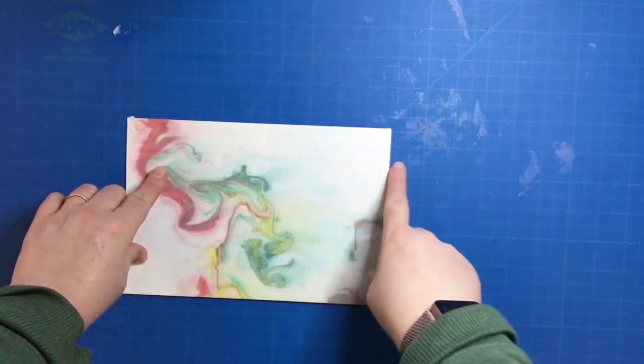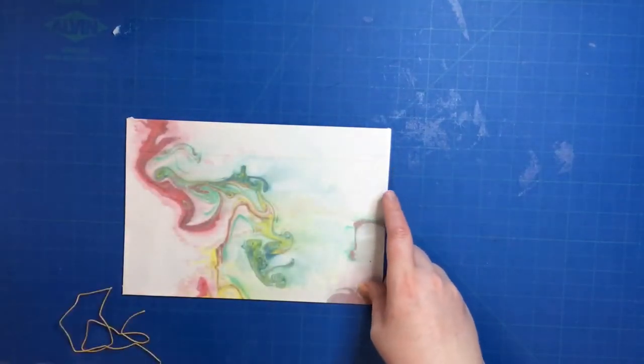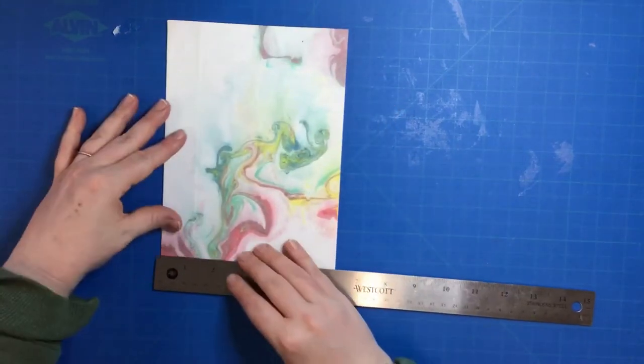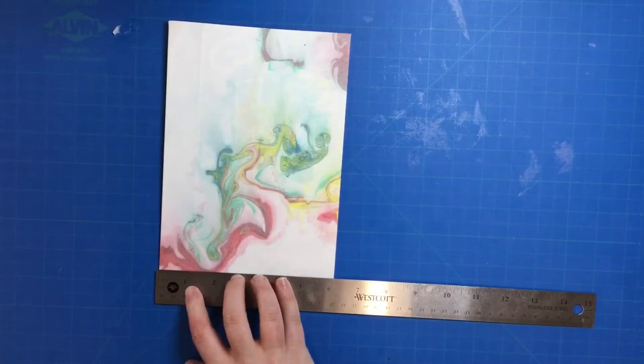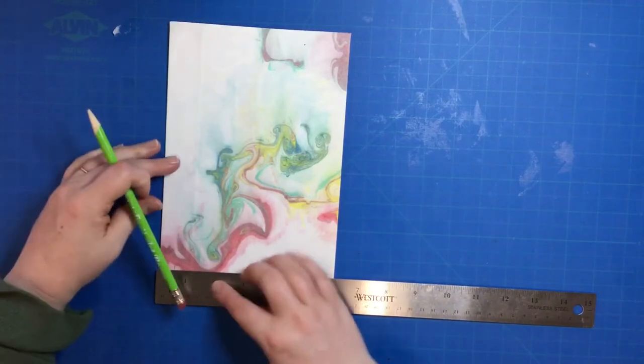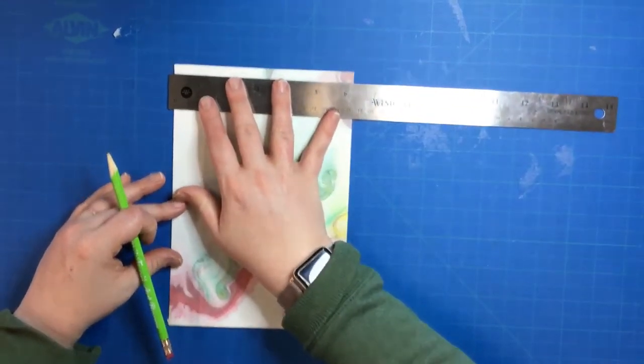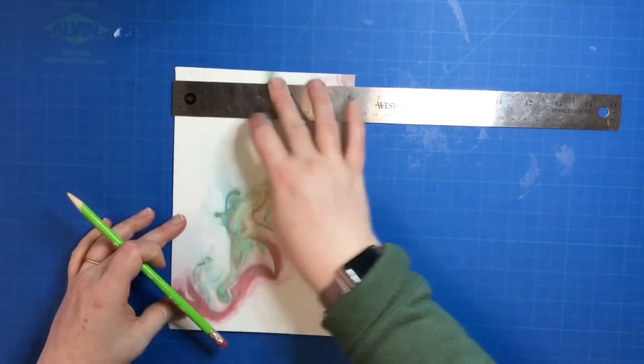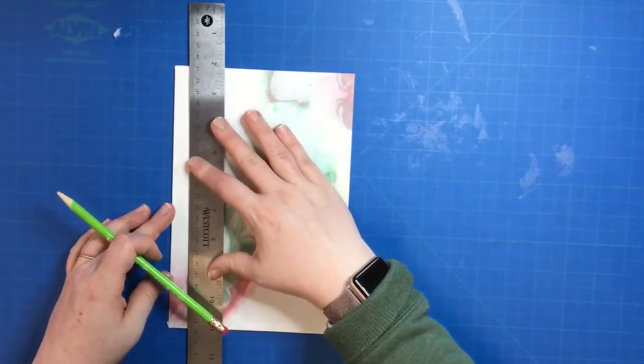Before we start binding, we're going to measure our holes. Don't forget that the cover is the one with the fold in it. Measure a half an inch on the top and a half an inch on the bottom out from the edge. Make sure that you have a straight line through the middle.